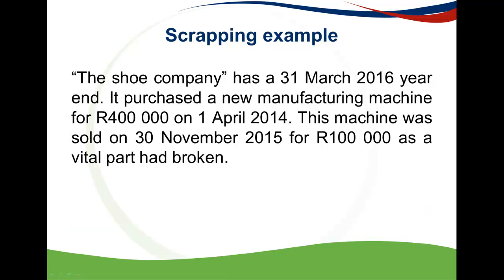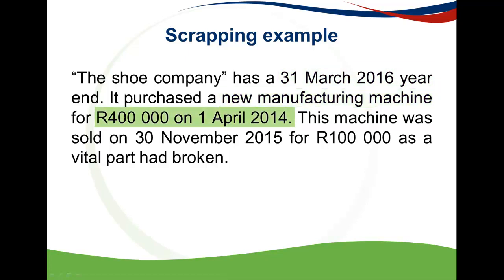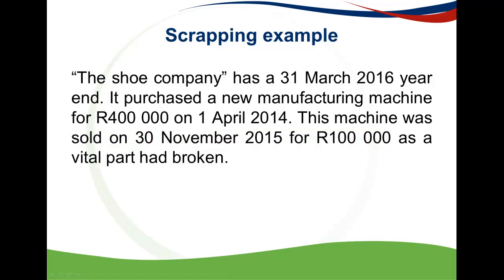Let's look at an example. The Shoe Company has a 31 March 2016 year end. They purchased a new manufacturing machine for R400,000 on the 1st of April — so on a timeline, the year the asset was purchased was the 2015 year of assessment. The machine was sold on 13 November, which falls in the 2016 year of assessment, for R100,000, as a vital part had broken.